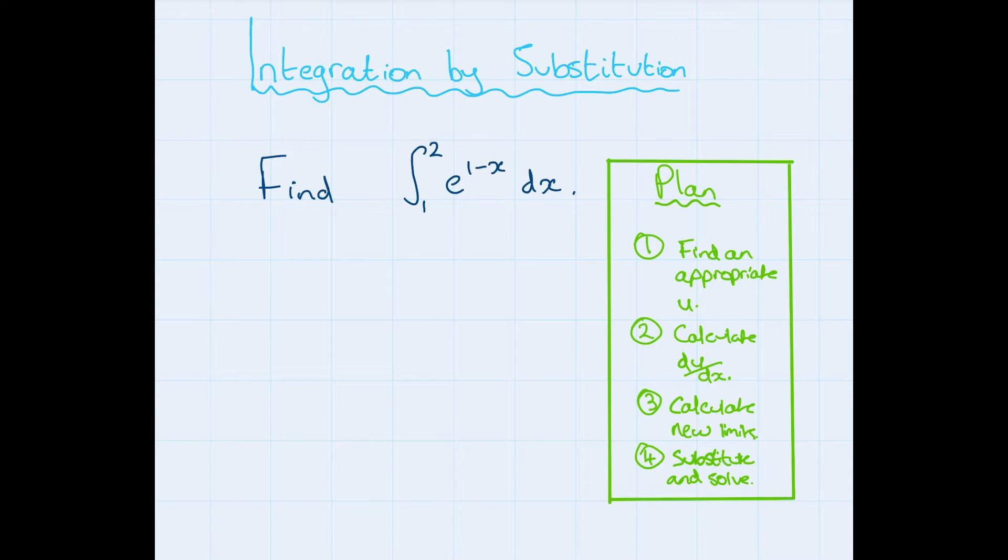Then we need to calculate du by dx, so differentiate u. We also need to take care with these limits here, because these are the limits in the x world. We will need to change them over to u, and then we just substitute our u and solve from there.